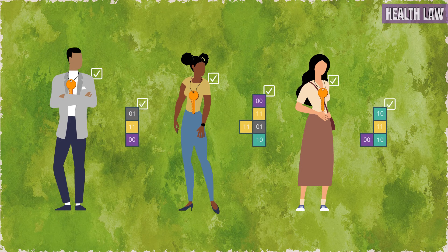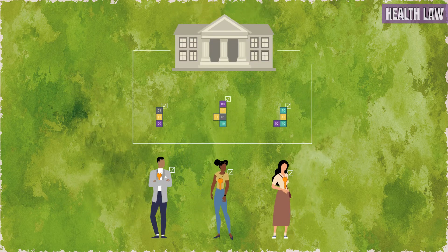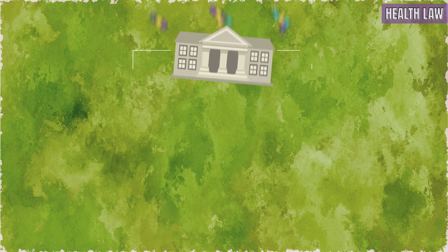In practice, all the data instances may be owned by the same research institution that is also the copyright holder in the data set. This will simplify matters a lot. However, because personality rights cannot be transferred, consent will always need to be obtained from the research participants — that is, the data subjects.